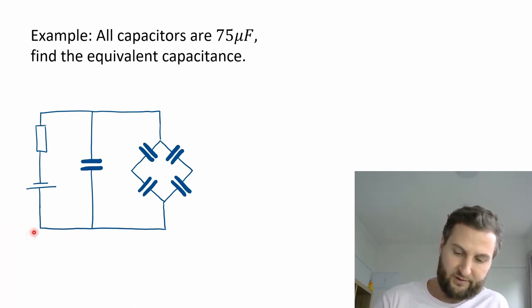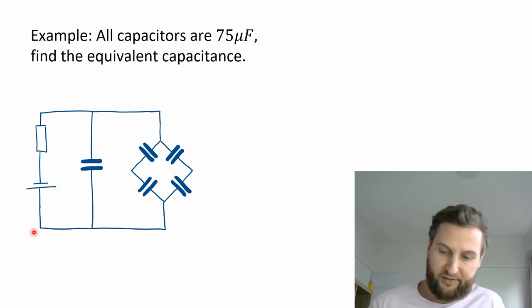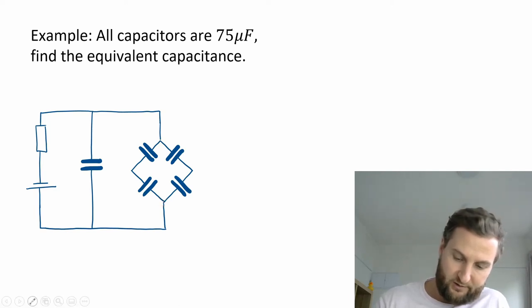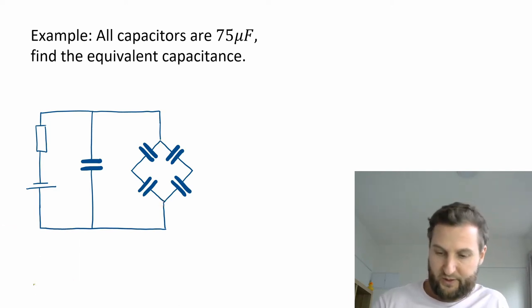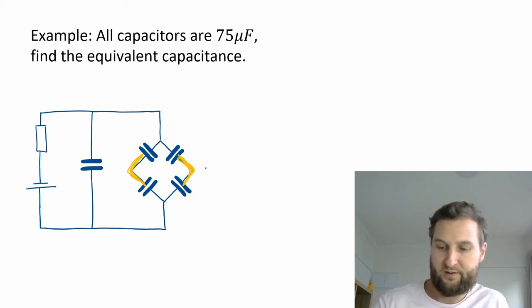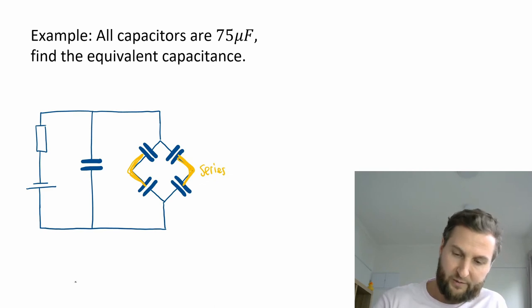Here's one for us. All capacitors are 75. Find the equivalent capacitance. So I've got kind of an interesting arrangement here. I've got definitely a parallel arrangement with this one in the middle because I have a branch here, but I also have a node at this point. So working this out, it looks like along this branch, these are in series. And same with along this pathway here.